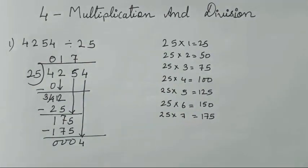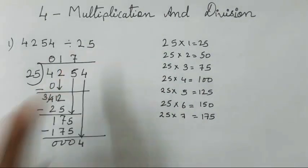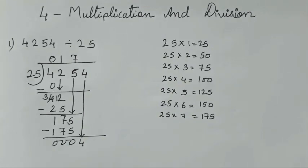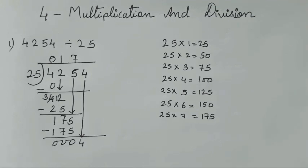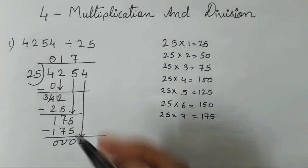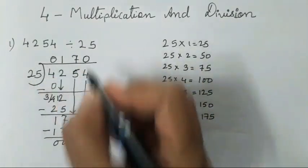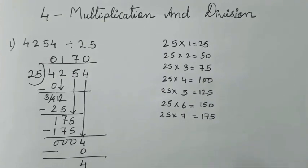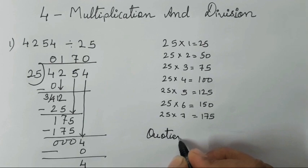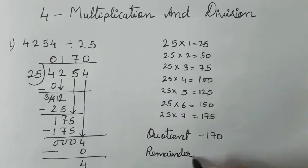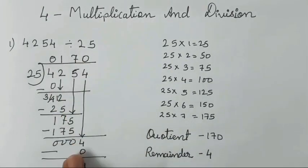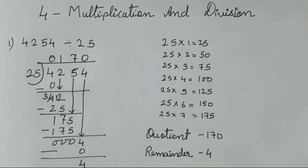After subtracting, bring the 4 down. Now 4 does not appear in the 25 table and there are no more digits, so we stop. We do not add a decimal point here because we are doing simple division — we only need the quotient and remainder. So write: 25 zeros are 0. Your quotient is 170 and your remainder is 4.